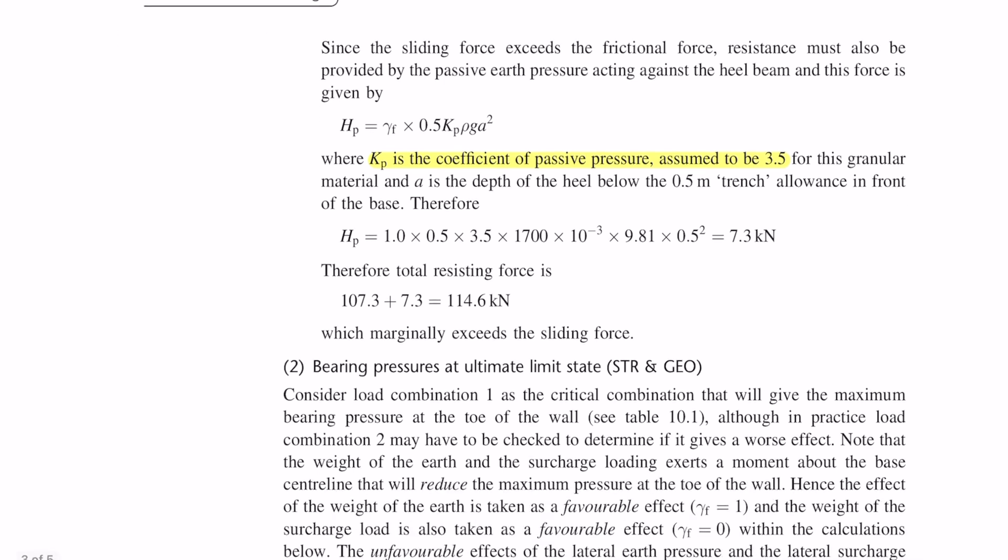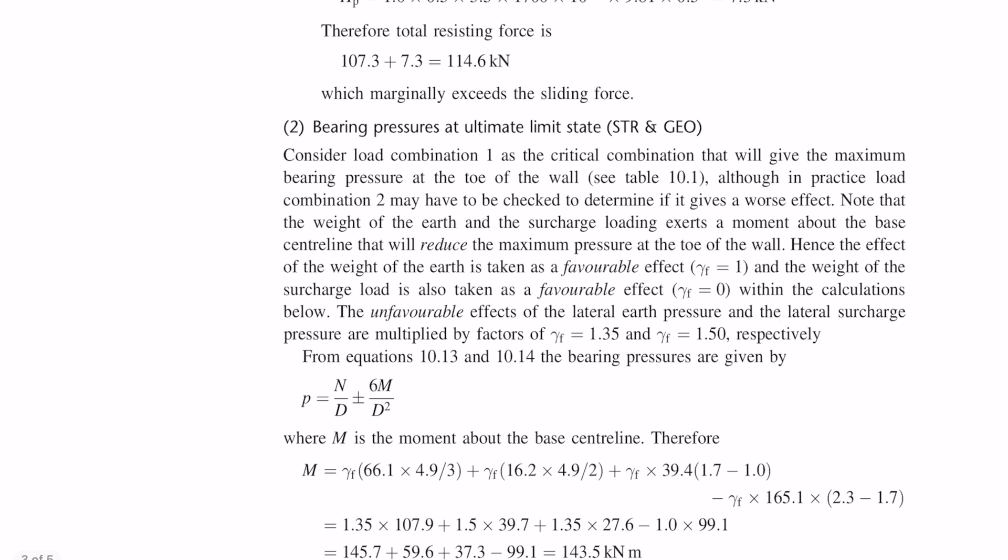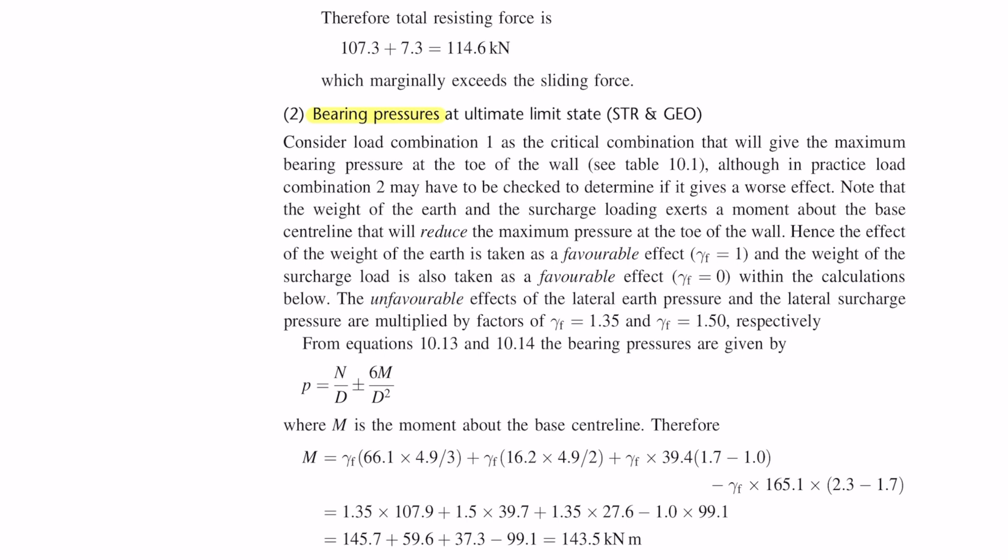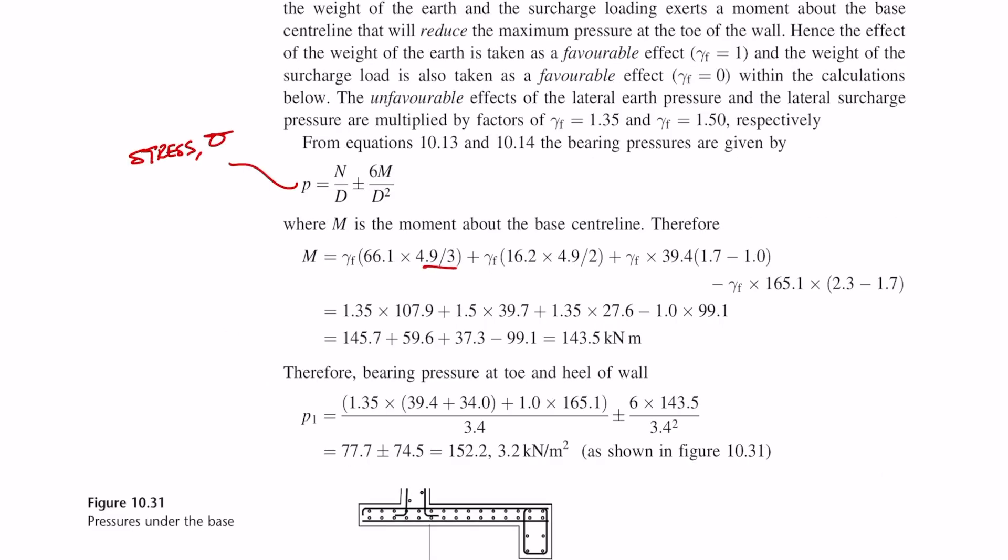Now that we've done the stability check we need to check what the bearing pressures are. In a similar way to how we calculated the bending moments when we did the check for overturning, we need to find the moments about the base centerline. The moments due to earth pressure and surcharge are basically exactly the same as when we did it for the overturning check. What's slightly different is because of where we're taking moments, the weight of the stem is going to be additive to the earth pressure and surcharge moments.